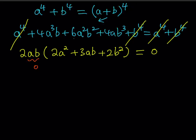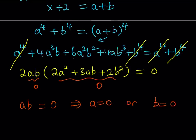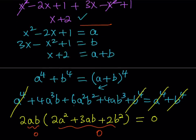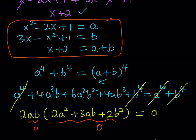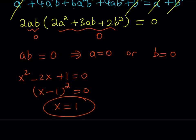Setting 2ab = 0 gives either a = 0 or b = 0. If a = 0, then x²-2x+1 = 0, which means (x-1)² = 0, so x = 1. This is a valid solution — we never squared both sides, so no extraneous solutions were introduced.